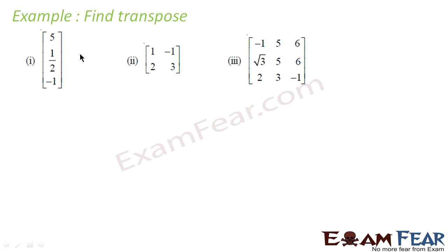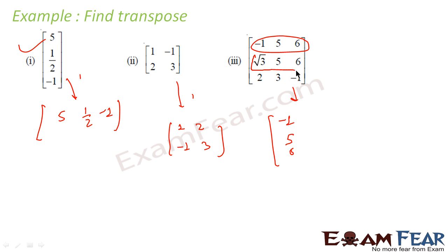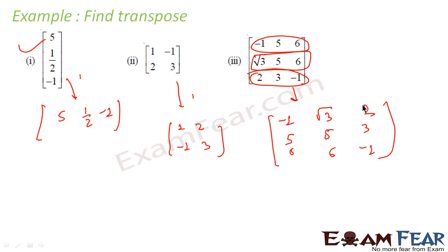Let us take some more examples of finding transposes. For the first matrix [φ, 1/2, 1], the columns become rows to give its transpose. For the second matrix, columns become rows to produce the transpose. For the third matrix, we try making rows into columns instead — taking each row and placing it as a column — and we get the transpose matrix. Both approaches yield the same result.